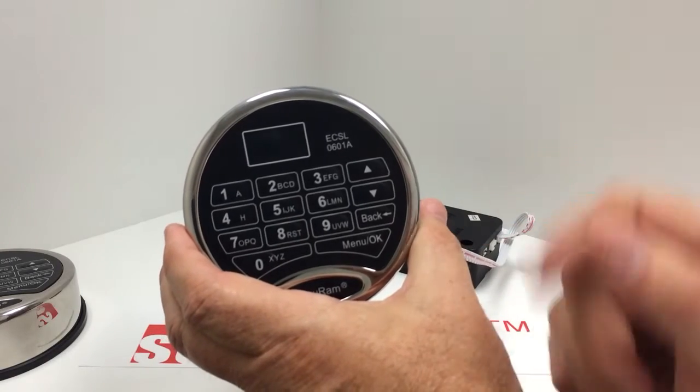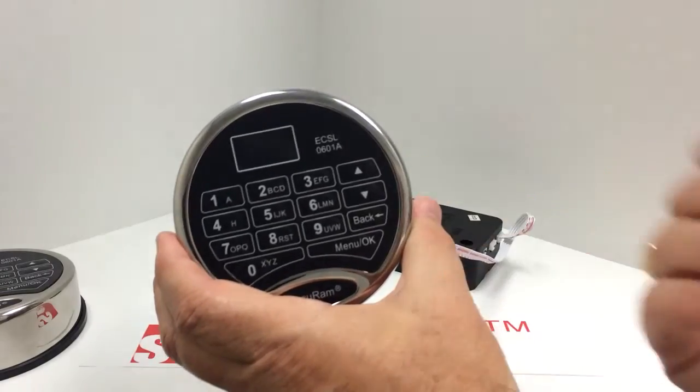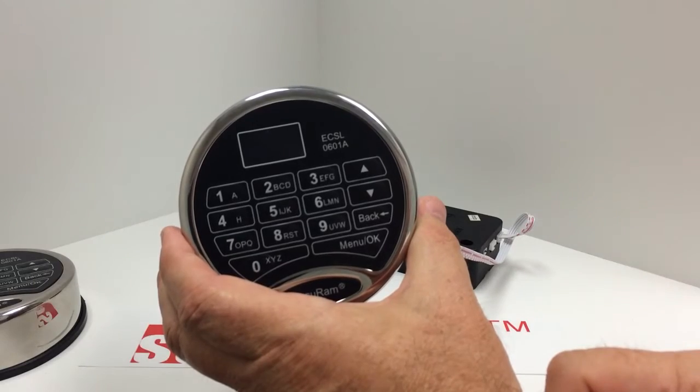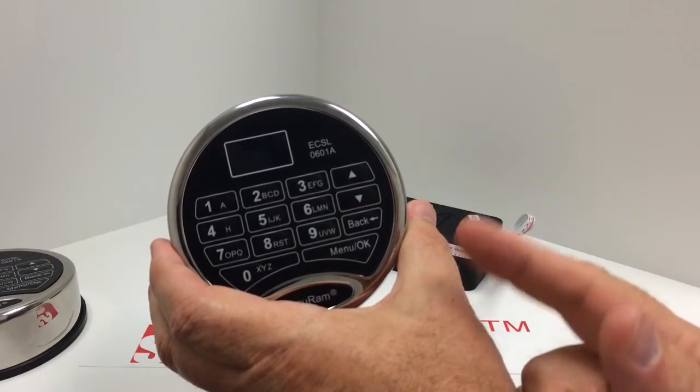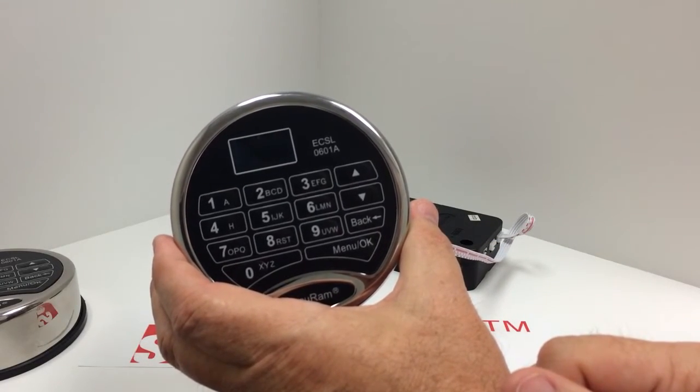In order to program those four things, I need to connect this lock, this entry pad, to another lock. It has to be connected as a full system, entry pad and lock, in order to program those things. So in order to gain access to this safe, I would have to pre-program all this information to gain access to the locked up safe.